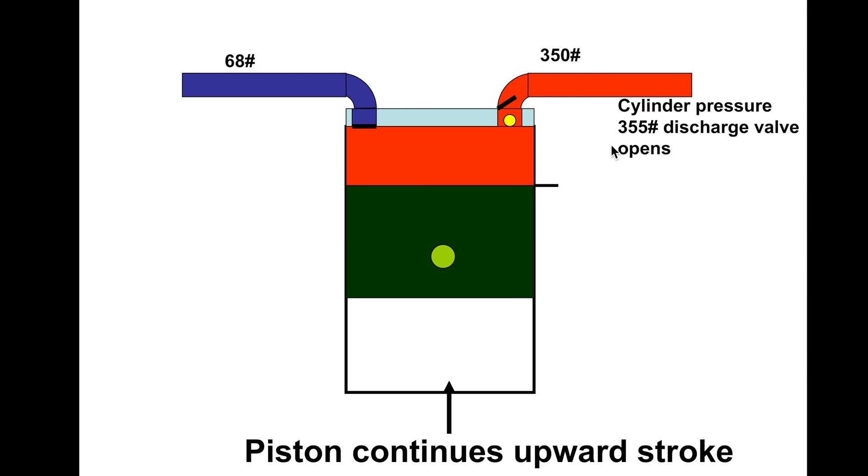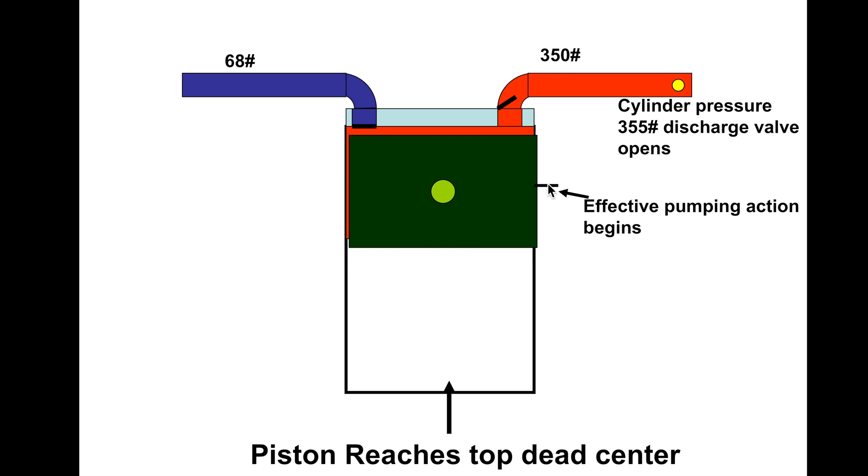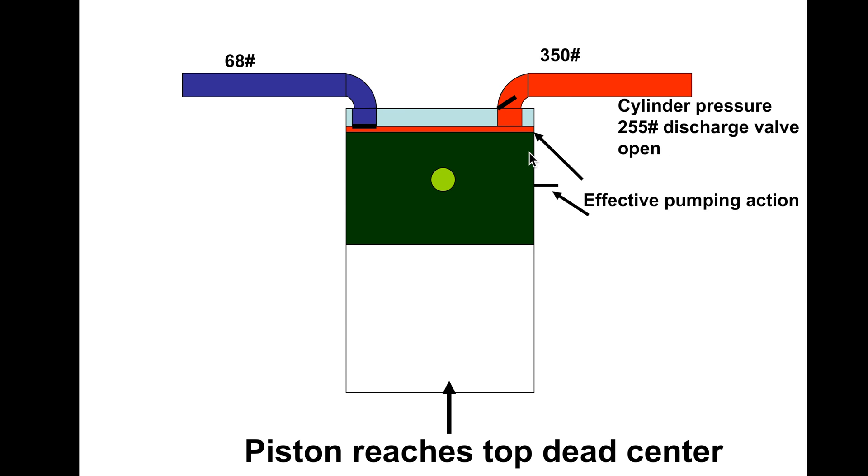Now when it gets to about 355, the discharge valve is open and we will get gas pumping out. Now the effective pumping action begins there at a much higher place than it did before. From here to here is effective pumping action. It's a lot smaller than it was with 250 pounds.